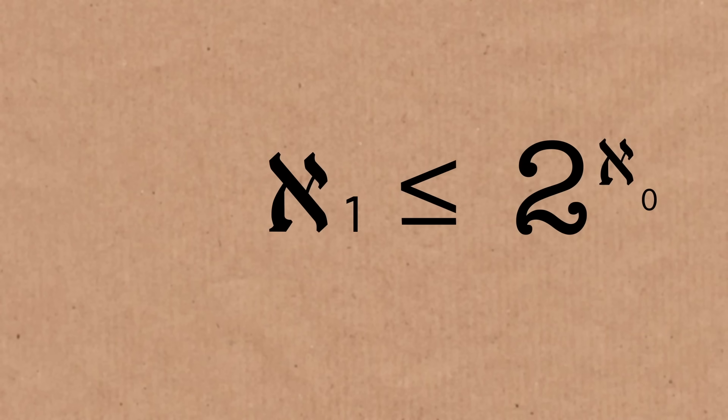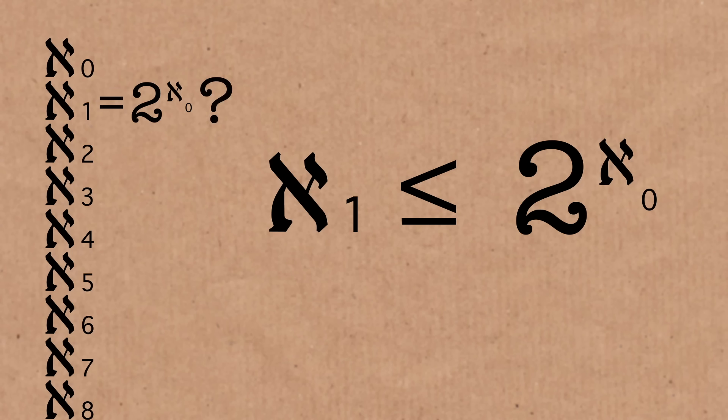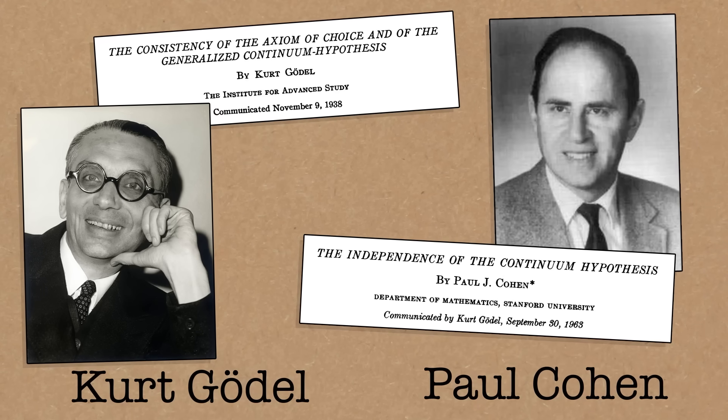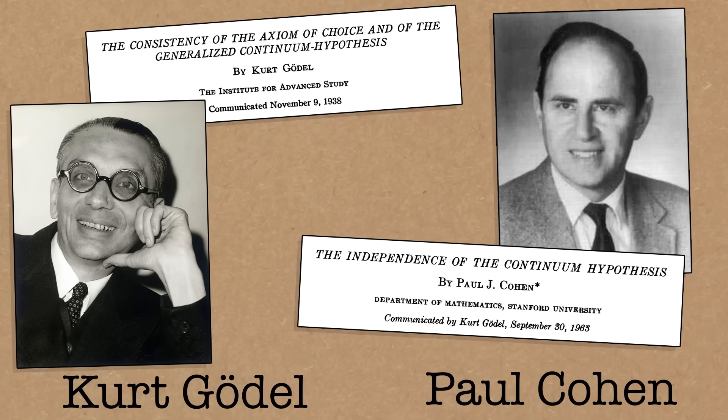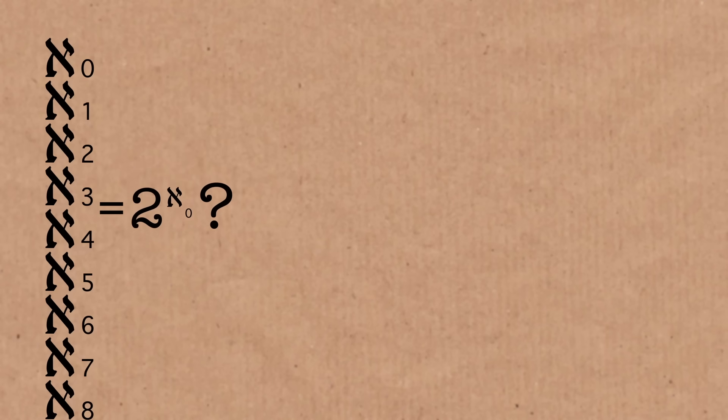Cantor hypothesized that Aleph-1 equals 2 to the Aleph-0. This is what he formulated as the continuum hypothesis. Famously, he tried to prove it for years and failed. After mathematics had been formalized and set theory written into axioms, Paul Cohen and Kurt Gödel proved the two parts: we cannot prove this, and we cannot disprove it. So it's possible in some mathematical universe they are equal, and possible in another that 2 to the Aleph-0 is strictly greater. The real numbers — where do they sit on the Aleph scale? We can't prove it; there are some constraints, but it can be almost anything.